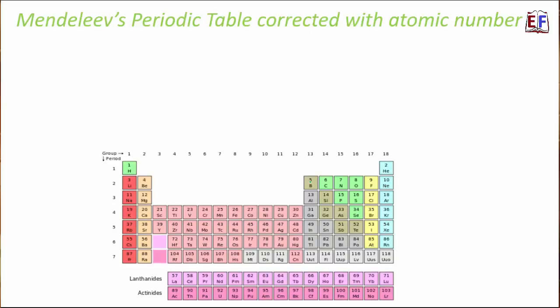The question was: was the modern periodic law able to overcome all the limitations of Mendeleev's periodic table? Let's look at each limitation one after another. First, the position of isotopes is now clear. Let's take examples — C12, C13, and C14, which are the three isotopes of carbon.